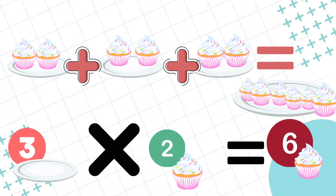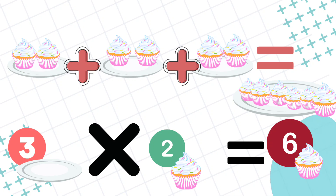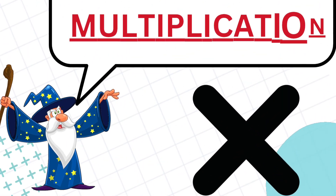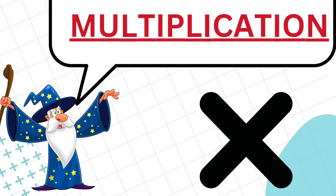Now, let's explore multiplication. Multiplication is like adding the same number over and over. Suppose we have three plates with two cupcakes each. Instead of adding two three times, we can multiply. Three plates times two cupcakes — that is two plus two plus two equals six. Otherwise, three multiplied by two is six.